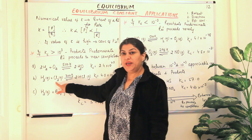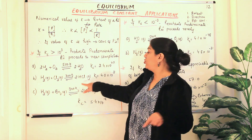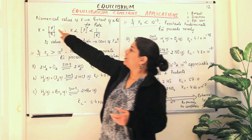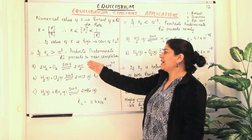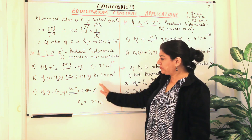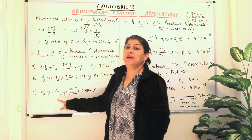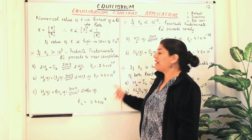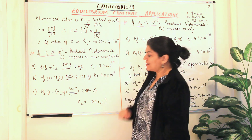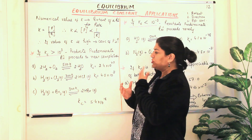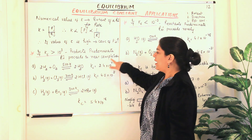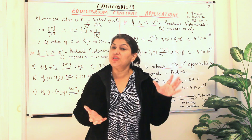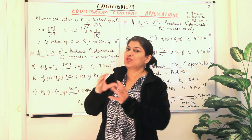Similarly, when hydrogen and bromine combine at 300 K to give hydrogen bromide, Kc = 5.4 × 10¹⁸. Out of these three values, the first reaction (Kc = 2.4 × 10⁴⁷) has proceeded maximum towards completion. The higher the value of Kc, the more the concentration of product compared to reactant, and therefore the ratio is larger.